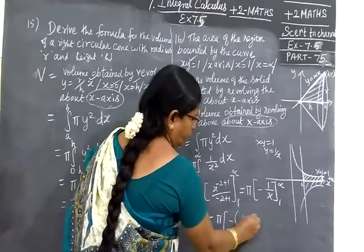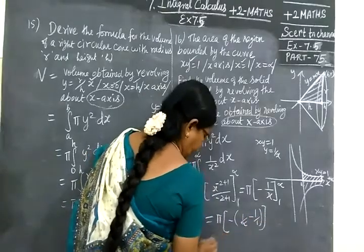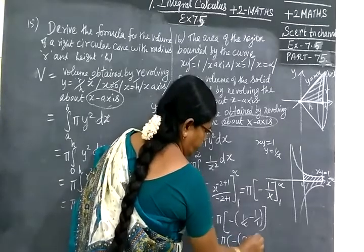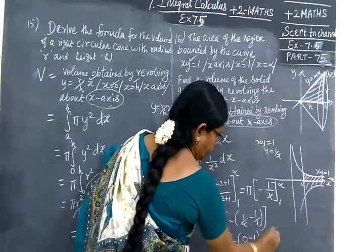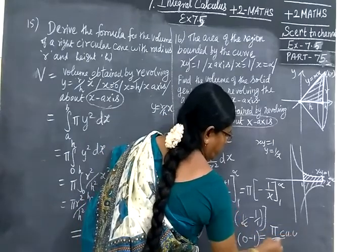Now you substitute π bracket, 1 by upper limit minus lower limit. So equals π times (1/infinity minus 1/1). 1/infinity equals 0, so minus 1 becomes minus minus plus. The answer is π cubic units.